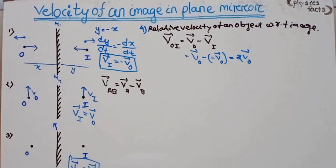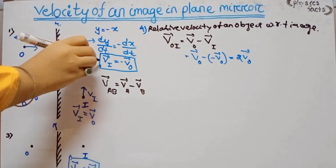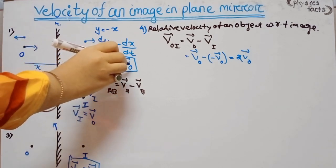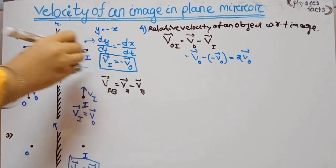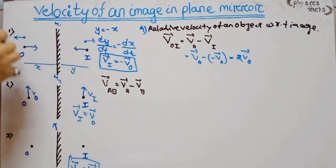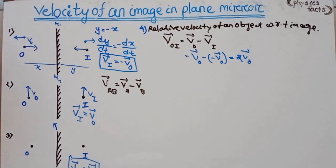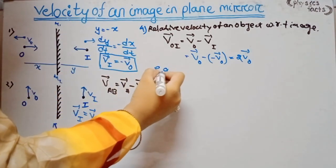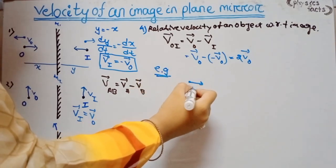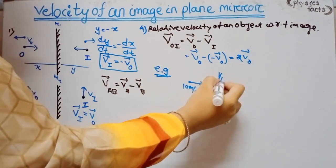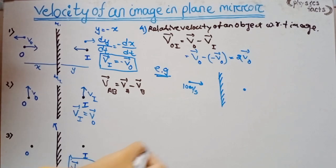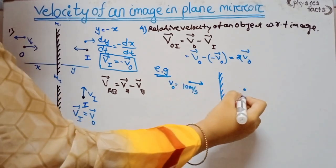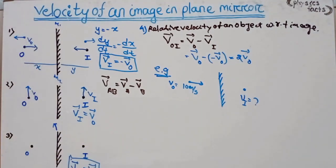When the object moves perpendicular toward the mirror, the velocity of the image equals the negative of the velocity of the object. The relative velocity of an object with respect to image is two times the velocity of the object. For example: if an object moves at 10 m/s towards a plane mirror, find the velocity of the image and the relative velocity of the object with respect to the image.